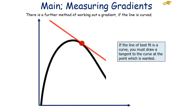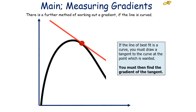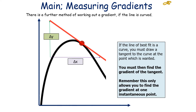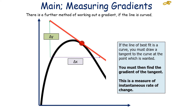If the line of best fit is a curve, you must draw a tangent to the curve at the point where you want to measure the gradient. You then find the gradient of the tangent by doing the change in y over the change in x of that tangent. Remember, this only allows you to find the gradient at one instantaneous point on the graph — it doesn't tell you the gradient of the entire graph, just the gradient at that instantaneous point. So it is a measure of the instantaneous rate of change.